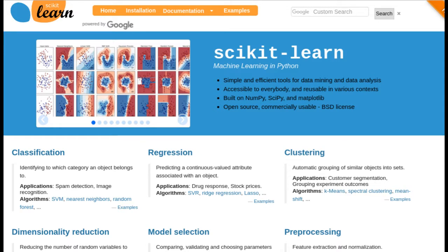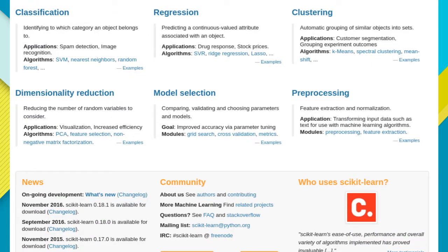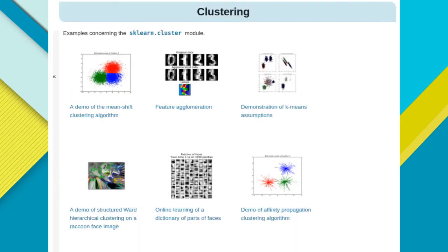Scikit-learn is one of the most popular machine learning libraries in Python. It supports algorithms for tasks like classification, regression, clustering, and dimensionality reduction. It also includes modules for extracting features like text features or image features, so that you can make sense of your data. It's a very popular machine learning library, and in these videos we'll show you how to use it.